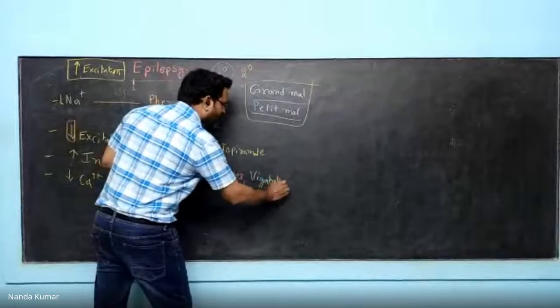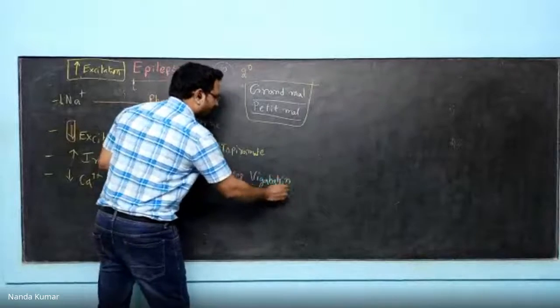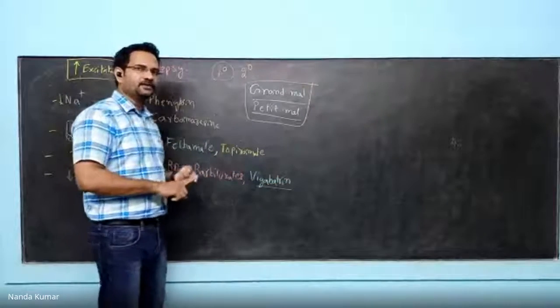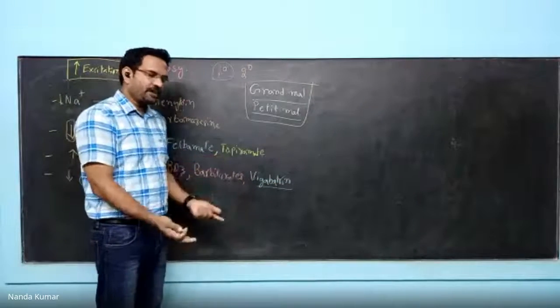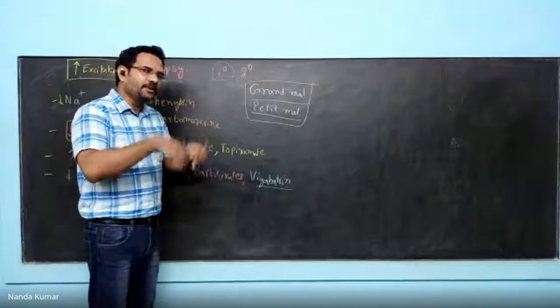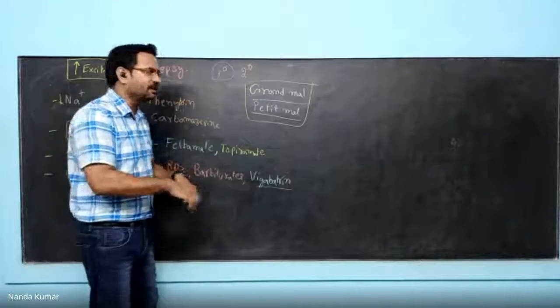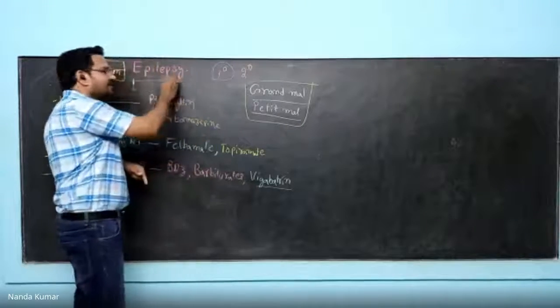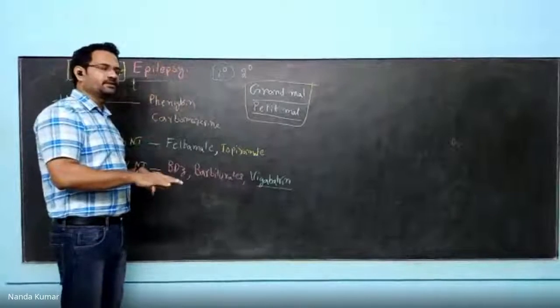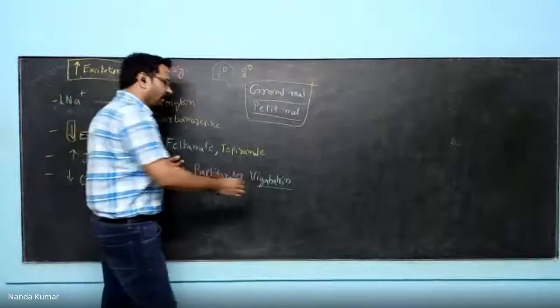Vigabatrin inhibits GABA metabolism, so GABA is not metabolized and GABA levels increase. Since GABA is an inhibitory neurotransmitter, neuronal excitation gets reduced.